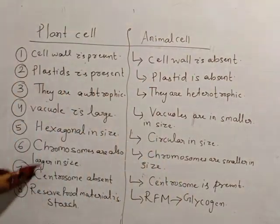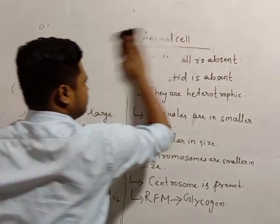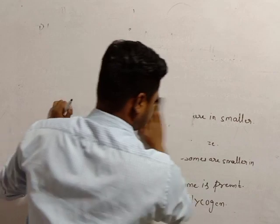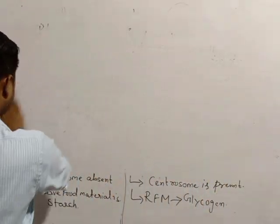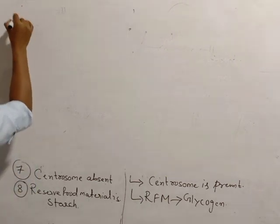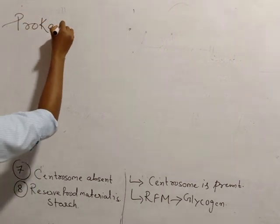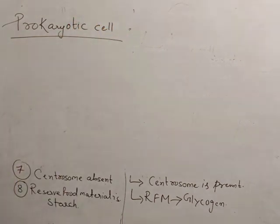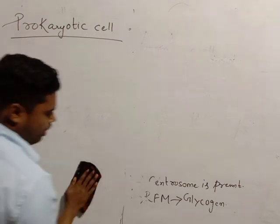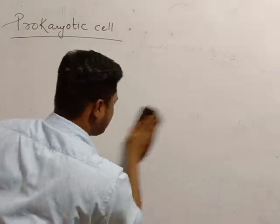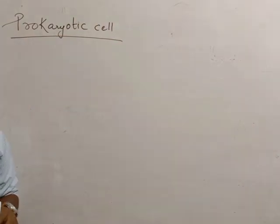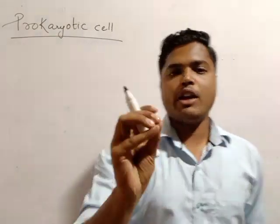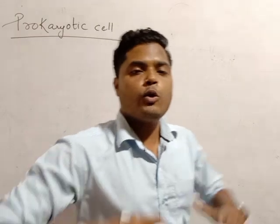Now we will discuss about details of prokaryotic cells. Prokaryotic cells - we shall have a detailed discussion. What is the prokaryotic cell structure? We'll discuss the points. Pro means primitive, karyos means nucleus - prokaryotic nucleus.